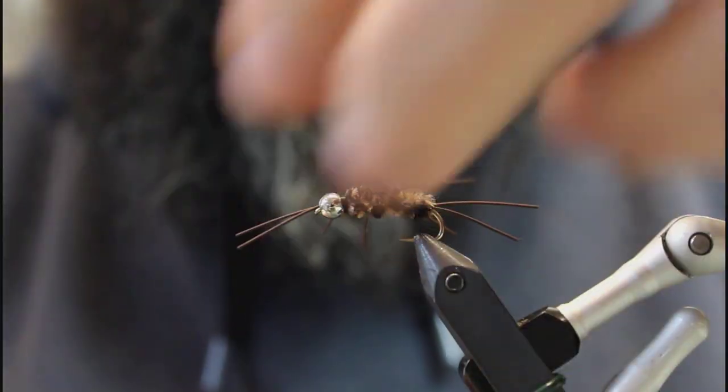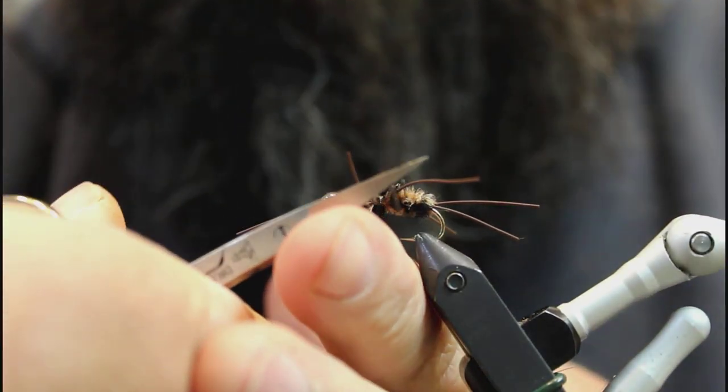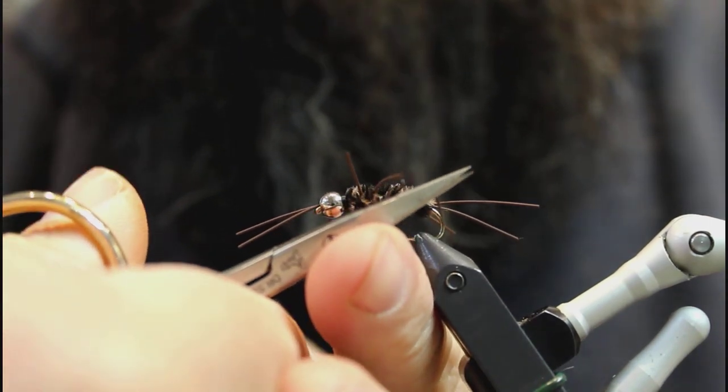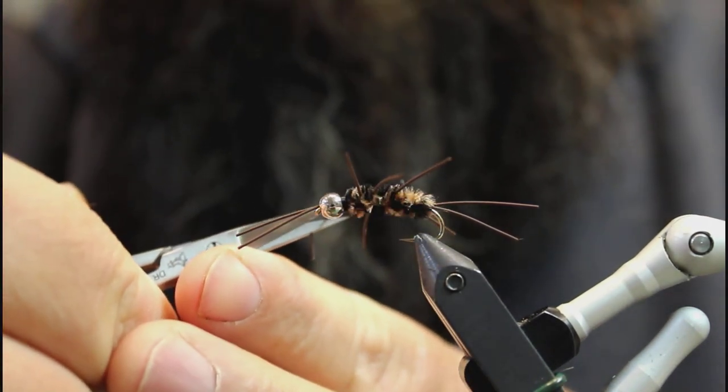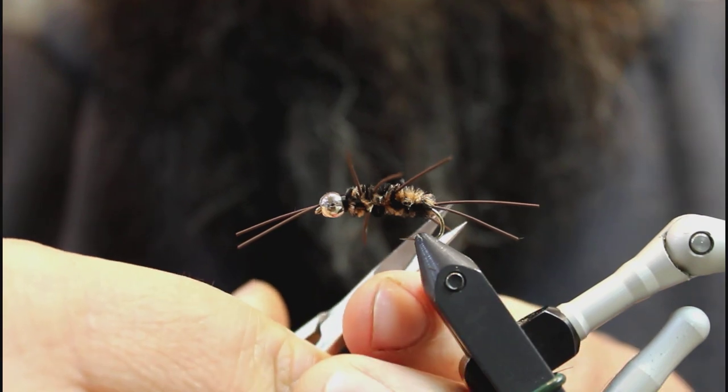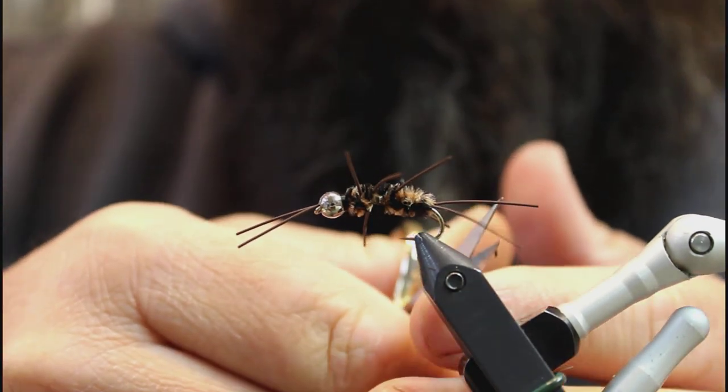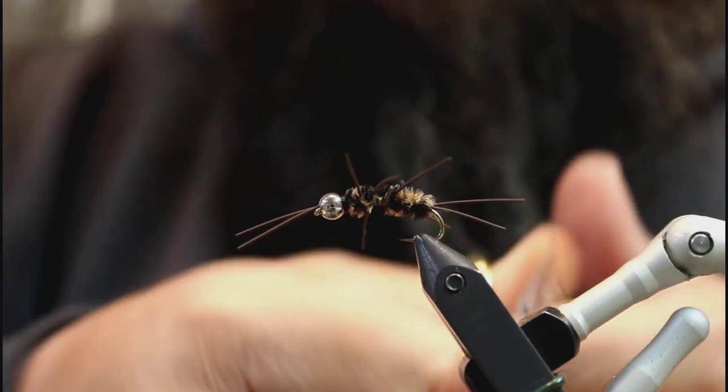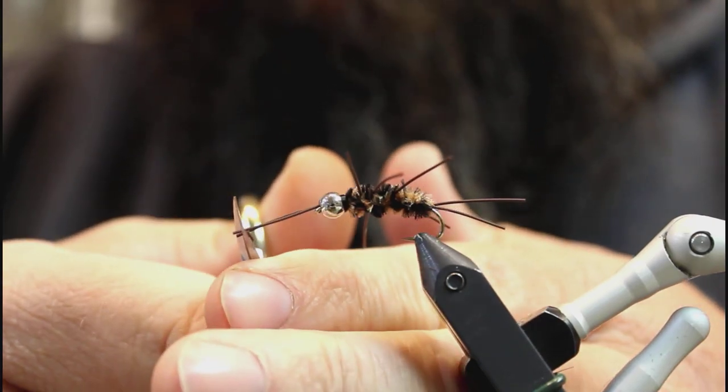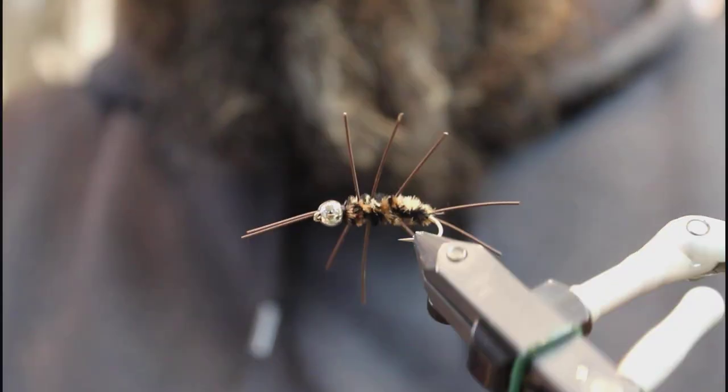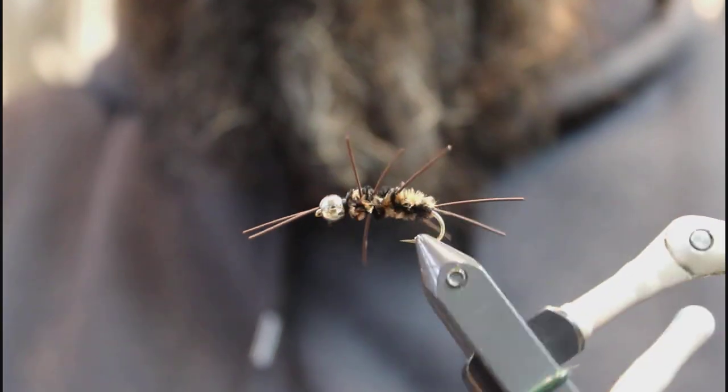Last thing I'm going to do here is just kind of go through. I like to leave the middle legs a little bit longer than the front and back legs. Just trim these up even. I'll take a little bit off the tail here. Make sure my antennas are even. That's all there is to the girdle bug.